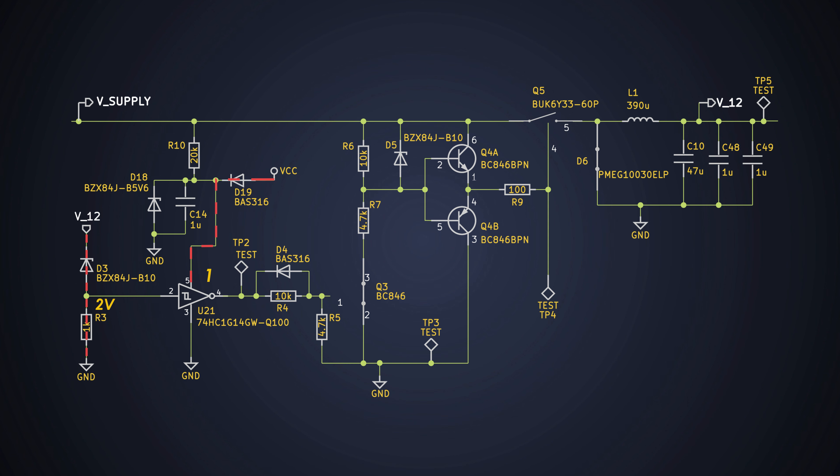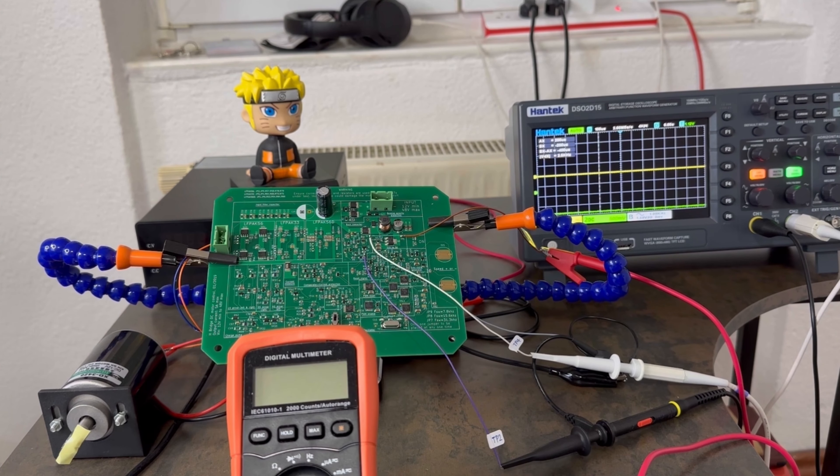If you change the input voltage range, this PWM duty cycle will change to provide a constant output voltage. Now, let's see the working of this circuit.